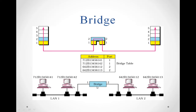Bridges have a special feature called the bridge table, stored in software form. This table contains two columns: the physical address of the computer systems connected to the bridge, and the port number, which is essentially the LAN number through which each system is connected. The bridge uses this table to transfer messages from the source computer to the destination computer.